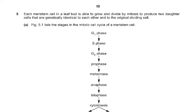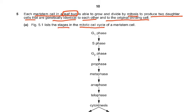Let's look at question number 5. Each meristem cell in a leaf bud is able to grow and divide by mitosis to produce two daughter cells that are genetically identical to each other and to the original dividing cell. Figure 5.1 lists the stages in the mitotic cell cycle of a meristem. Note that in MCQs, the mitotic cell cycle sometimes refers only to mitosis and at other times refers to the whole story.